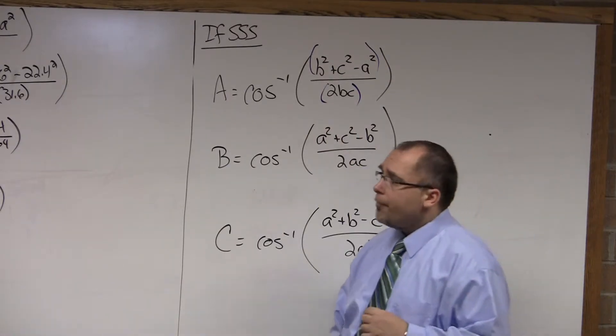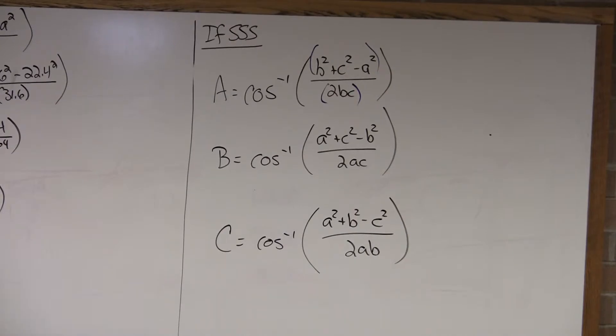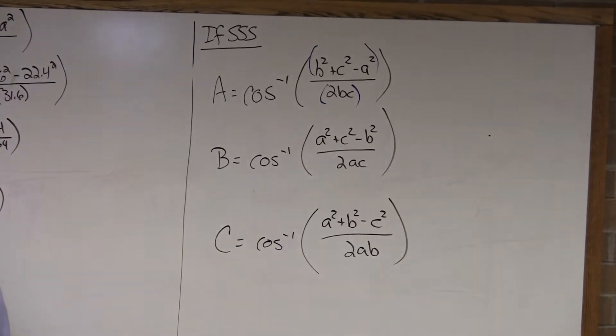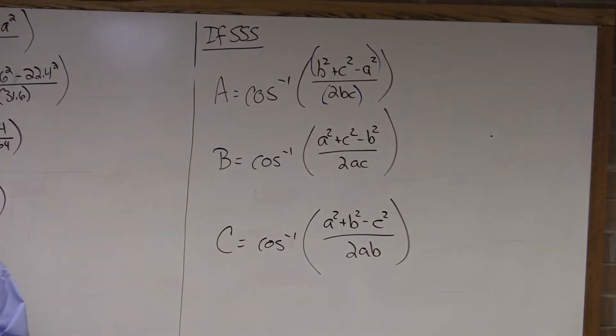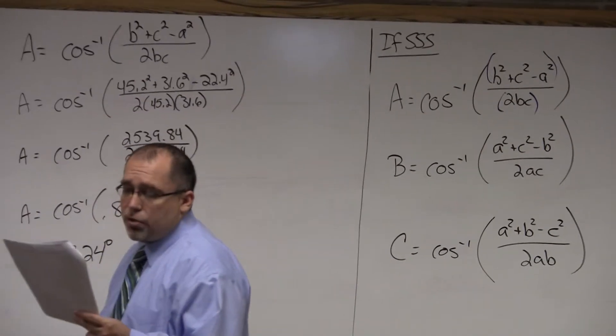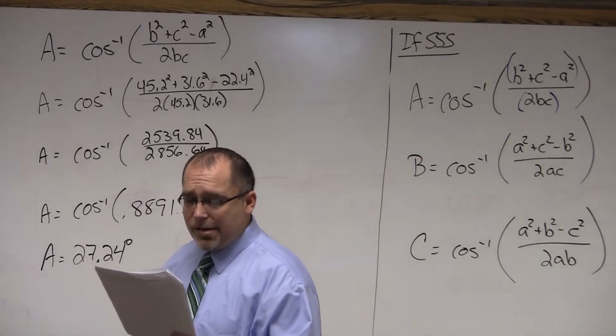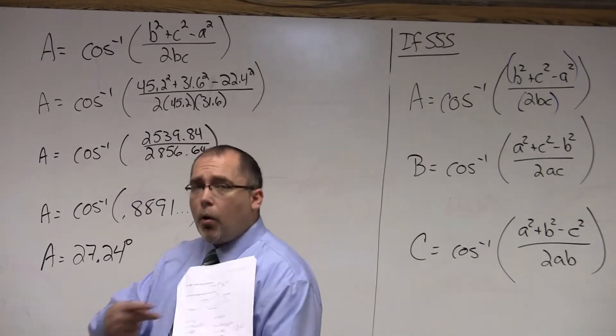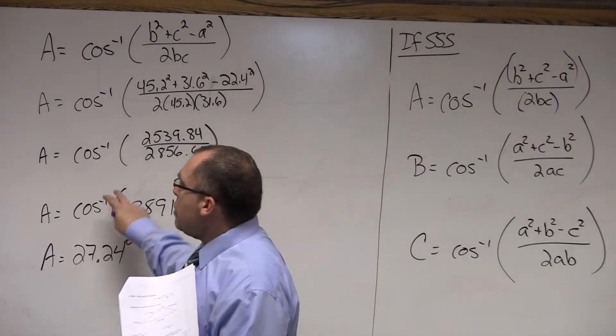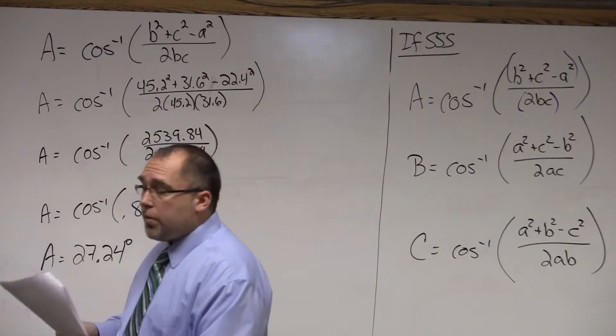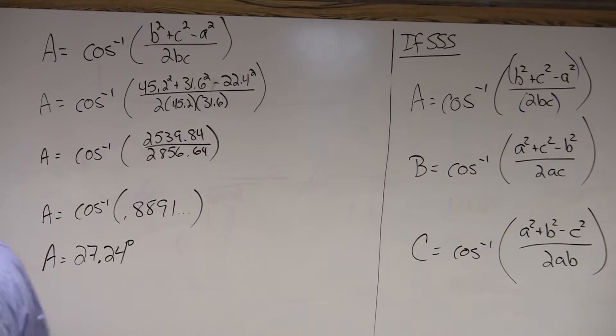Let me show you what I mean. If we look at the example, it's the last one on the info packet here for law of cosines. It'll give you a triangle with three sides given. Basically, side A is 22.4 kilometers, side B is 45.2 kilometers, and side C is 31.6 kilometers. And I worked out the problem here for you, but I'm going to show you how to use the law of cosines to solve for the first angle.